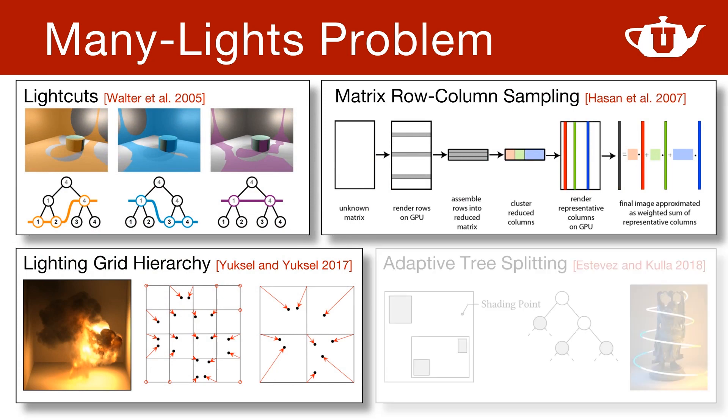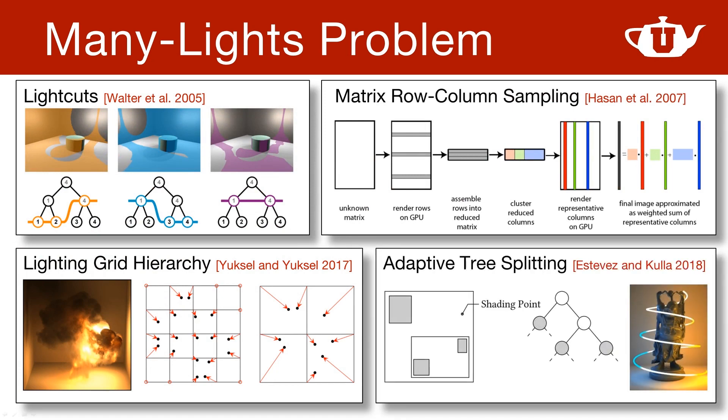Finally, adaptive tree splitting was presented last year at HPG, and it includes the idea of hierarchical sampling that we also use in this paper, but it doesn't have the nice convergence rate of light cuts and it can produce results with higher noise than traditional importance sampling, which should never happen. A common problem with all of these methods and their variants is that they all need a relatively large number of light samples to converge to an acceptable result with high enough accuracy or low enough noise.